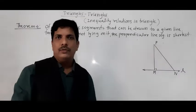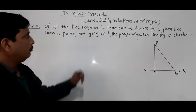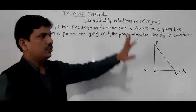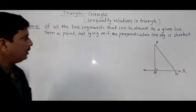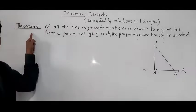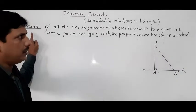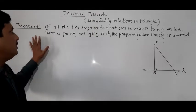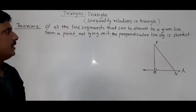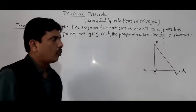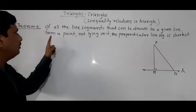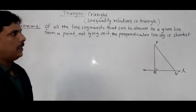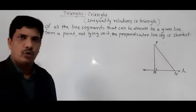Hello everybody. Today we are going to see one more theorem which depends on the concept of inequality relations in triangles. This is theorem number 4. Already we have seen three theorems which depend on the same concept. The statement is: of all the line segments that can be drawn to a given line from a point not lying on it, the perpendicular line segment is shortest.